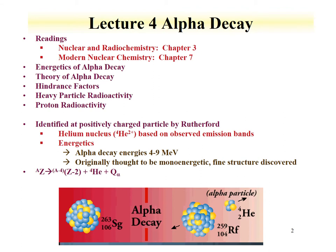For instance, if an alpha decays to an energetic daughter state, that will be accompanied by a gamma emission that will also be a measurement of that energetic state.